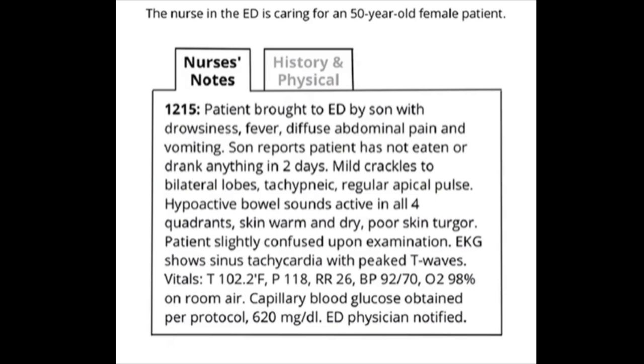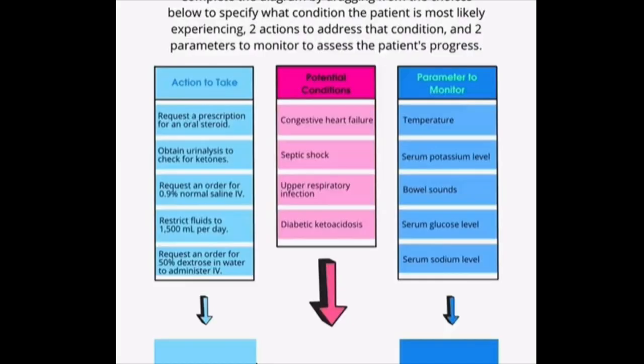Vitals are: temperature 102.2, pulse 118, respirations 26, blood pressure 92 over 70, O2 saturation 98% on room air, and blood glucose of 620.